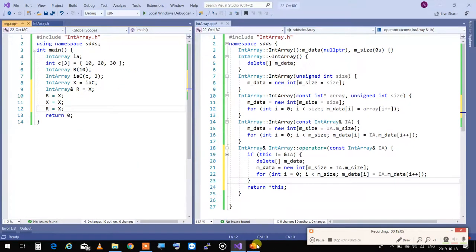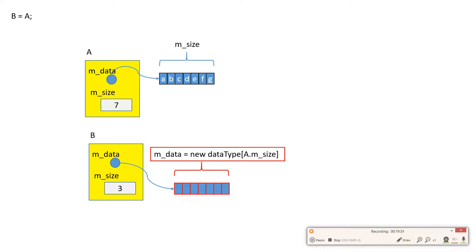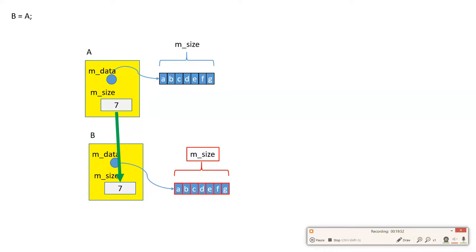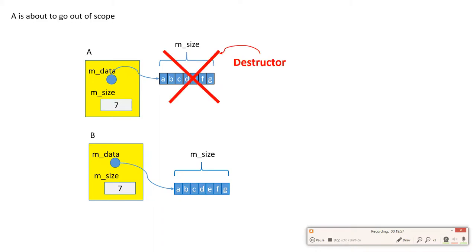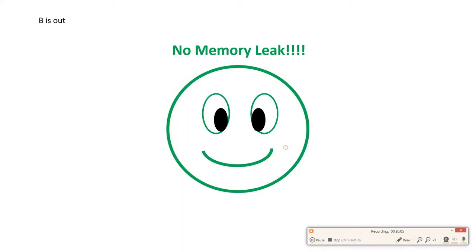Here's how assignment copying actually works: I have two objects with their sizes. For assignment, I first delete the target (b), then allocate enough space to the size of the source (a), then copy everything one by one from a to b, then update the size so both have the same size. When each object is destroyed, it cleans up its own memory — no memory leak.